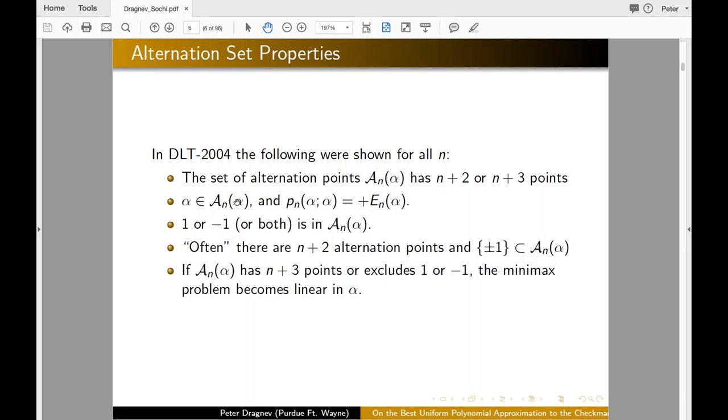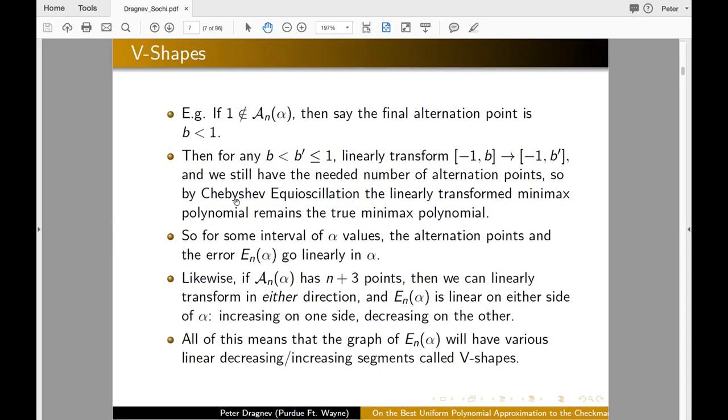We can have the one or negative one, sometimes missing as an alternation point in that kind of exceptional case. So the reason for this possibility is because there are these sections of E_n alpha that E_n alpha is piecewise linear. Namely, for example, if one is not an alternation point, the final alternation point is B less than one, then any B prime that is bigger, we can do a linear transformation. And what we see is the E_n alpha will be linear on that particular case for at least some values of alpha prime that corresponds to this beta prime close to alpha.